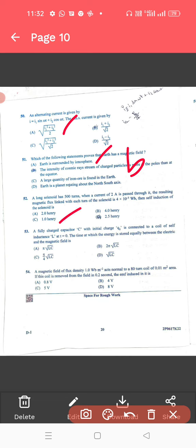53, a fully charged capacitor. For this, 5 by 4 root LC. For 54, a magnetic field of flux density. For 54, the correct answer is 4B.